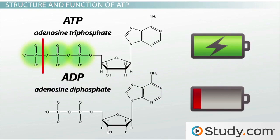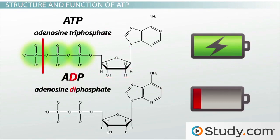But in order for your body to use ATP energy, it must break the bond between the last two phosphates. Breaking that bond releases the energy your body needs for survival. However, this chemical reaction also changes ATP into ADP, adenosine diphosphate. ADP is like a rechargeable battery that has lost its charge. To recharge ADP, your body must convert food to energy through the process of cellular respiration.